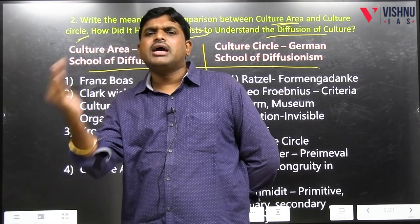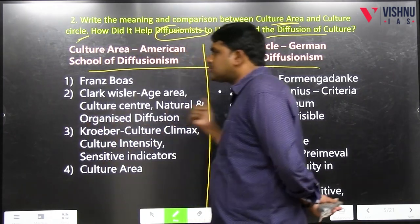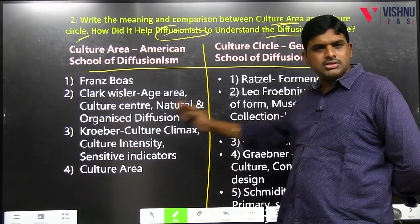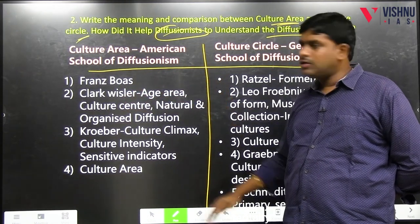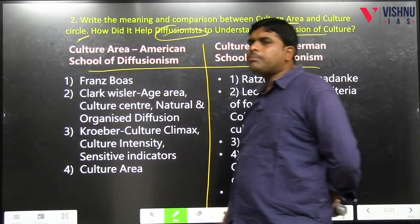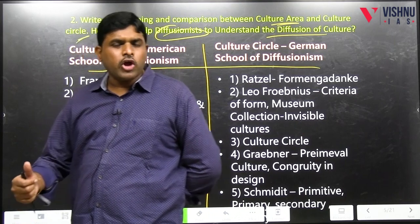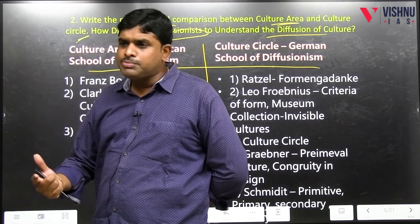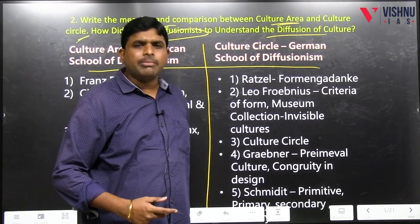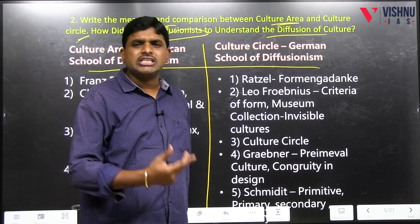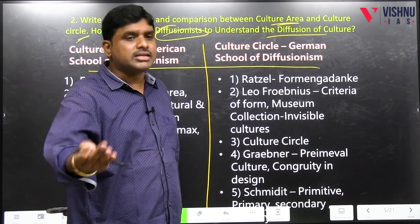So, next side heading is 'Culture Area and Culture Circle.' I will put a box and write: culture area — culture circle. Who are the anthropologists in culture area? KFC: Kroeber, Franz Boas, Clark Wissler. In German, who are involved? GSLV: Graebner, Schmidt, Leofrebenius, Ratzel.